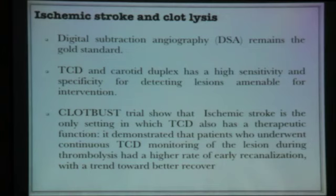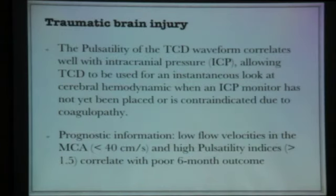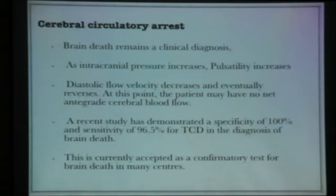For ischemic stroke there is the CLOTBUST trial showing clot lysis can be guided under ultrasound with benefit — this is the only modality where transcranial ultrasound serves as a therapeutic guidance tool. Cerebral circulatory arrest has 100% specificity and 96.5% sensitivity. This is currently accepted as a confirmatory test. In traumatic brain injury, if ICP increases, flow velocity decreases. Cerebral circulatory arrest shows characteristic flow reversal with poor systolic flow and negative diastolic flow.